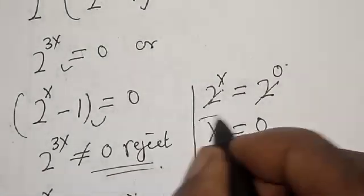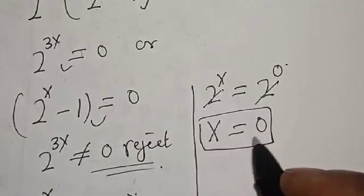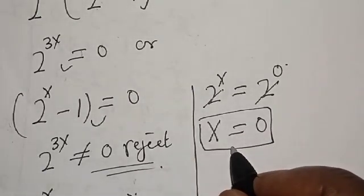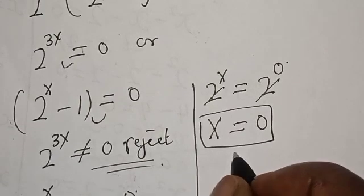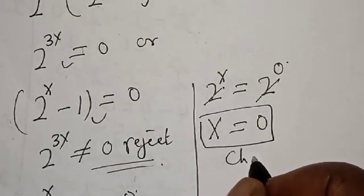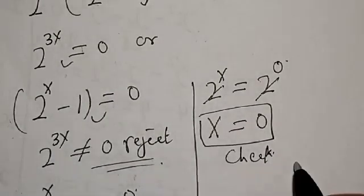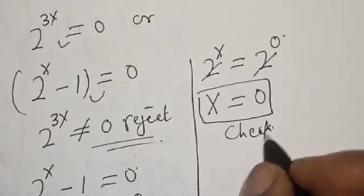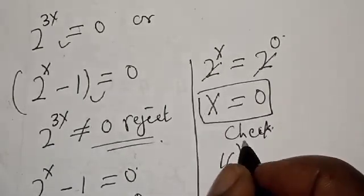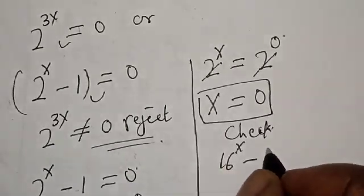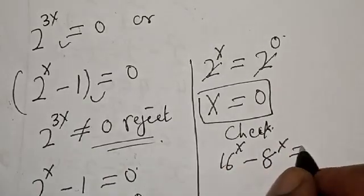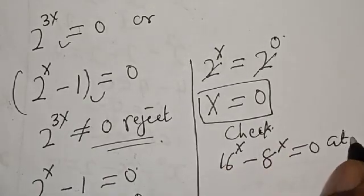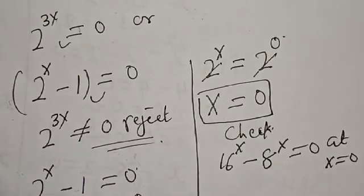The answer is x equals 0. Now let's check to confirm if our answer is right or wrong. We have the given equation: 16 raised to power x minus 8 raised to power x is equal to 0, at x equals 0.